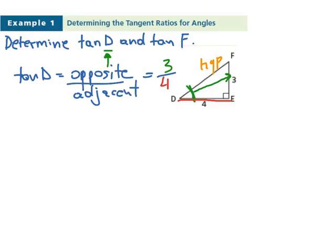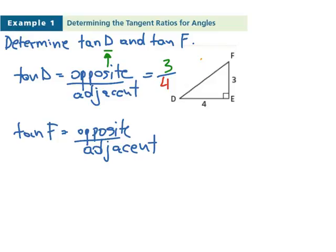What about our tan F? Again, it's opposite over adjacent. It's a good practice to write this down so it becomes a part of your memory. But now our reference angle is not D like before. It's actually F. So with respect to F, now the opposite side is 4, and the adjacent side is 3.